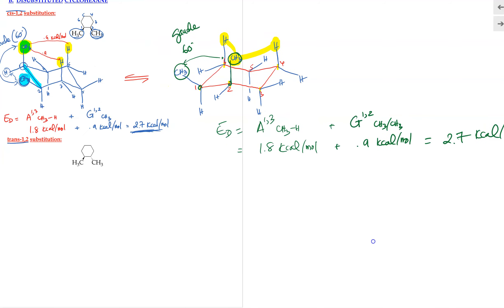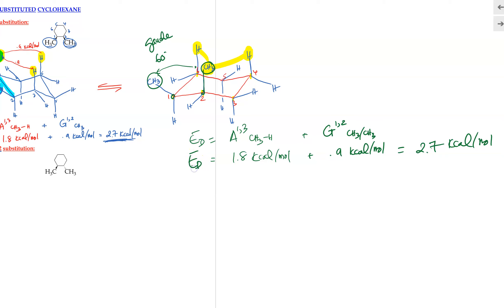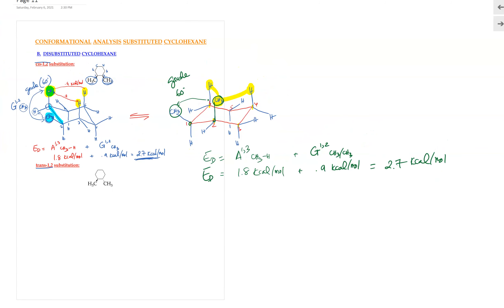Overall, the total destabilizing energy for this conformation equals 2.7 kcal/mol. Both chair conformations have similar destabilizing energy — they're equally stable. The difference in destabilizing energy is equal to 0, so both can exist. Therefore it goes back and forth: 50% of the time it exists in one conformation and 50% of the time in the other.